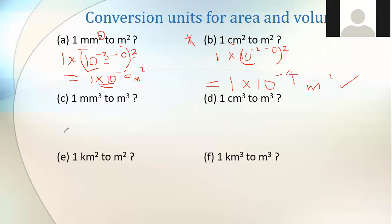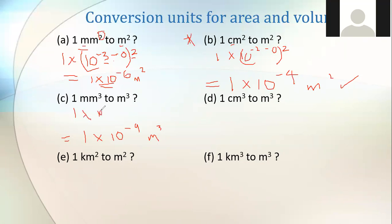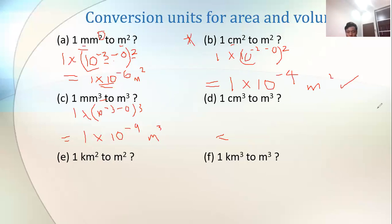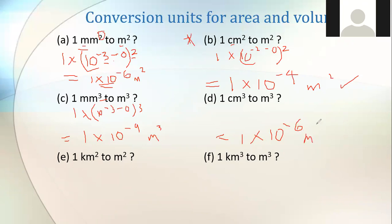Next, c: 1 mm³ to m³. Milli is negative three, minus zero, cubed — so the power becomes negative nine. That's 1 times 10⁻⁹ m³. And d: the answer is 1 times 10⁻⁶.